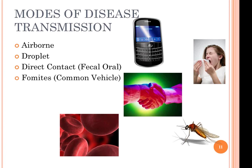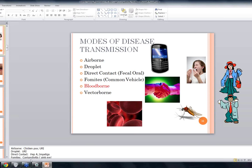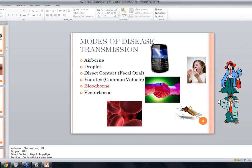Fomites means there is a common vehicle for transmission — take a cell phone, for example. If I use it while I have a cold or a transmissible virus and then give it to someone else to use, they may get more than they bargained for via the cell phone as a fomite.